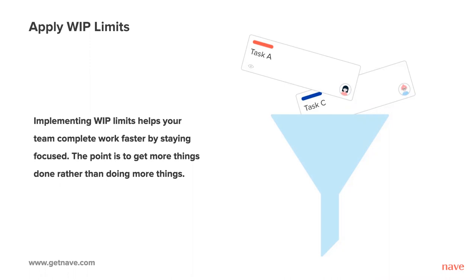Jira provides the option to set WIP limits on each status on your Kanban board, which is a good starting point. If you use Trello, there is a power-up called List Limits Power-Up that lets you set WIP limits for each work-in-progress list in your board.